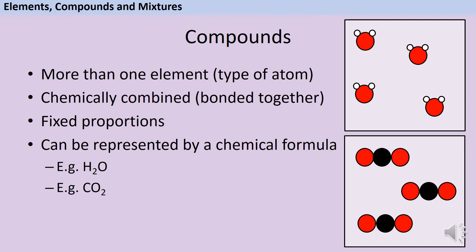Compounds can be represented by a chemical symbol formula, like H2O or CO2. And what this tells me is how many of each type of atom there are bonded together to make a molecule or to make a lattice.